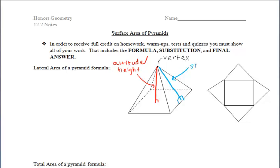Looking at these components: the red segment is called the altitude or the general height of the pyramid. The blue segment is the slant height of the pyramid, or the height of one of the triangular faces. The yellow segment is what we call a lateral edge. If we connect any two of those segments, we can create right triangles propped up inside the pyramid.